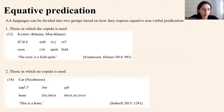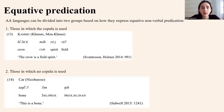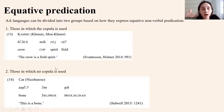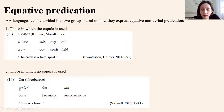Austroasiatic languages can be divided into two groups based on how they express equative nonverbal predication. The first group is those in which a copula is used — as in example 13 — and those in which a copula is not used, as in example 14 from the Nicobarese language Car.